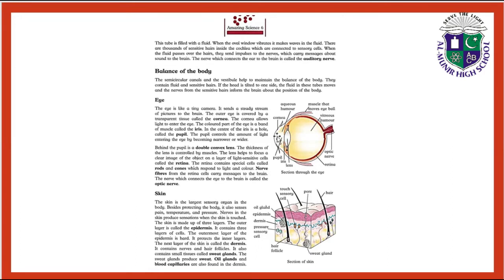Behind the pupil is a double convex lens. The thickness of the lens is controlled by muscles. The lens helps to focus a clear image of the object on a layer of light-sensitive cells called the retina. The retina contains special cells called rods and cones.